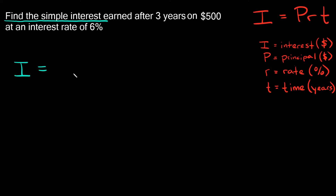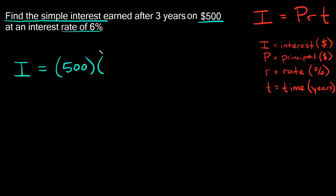So what are the values of P, R, and T? Well, principal would be your dollar amount — $500. Then you're going to multiply that by R. The rate in this problem is six percent. But you don't put six percent directly into the formula — you have to convert this percent to a decimal.